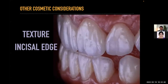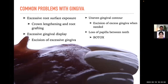We need to look at other cosmetic considerations like tooth texture, smooth mamelons, whether the tooth is textured, or incisal edge — natural versus even incisal edges of the six anteriors. Sometimes because of parafunctional habits like bruxism or nocturnal bruxism, the incisal edge is worn off. There are common problems with gingiva: excessive root surface exposure — in that case consider crown lengthening and root grafting — excessive gingival display — consider excision of excessive gingiva — uneven gingival contour, or loss of papilla between teeth, where many people consider Botox.